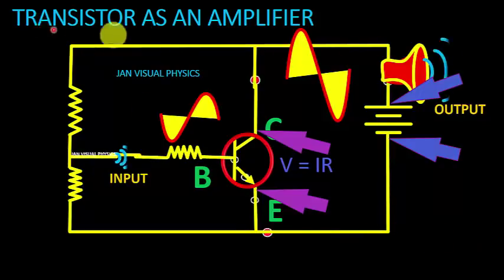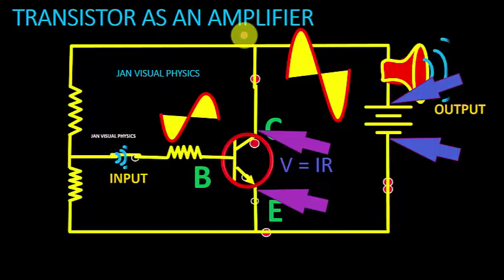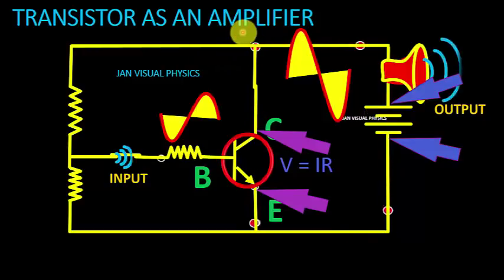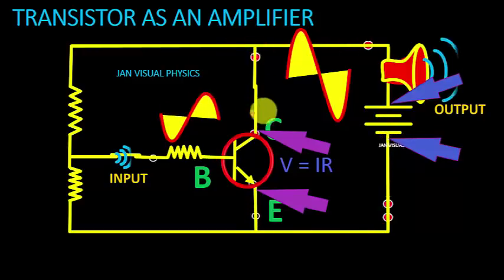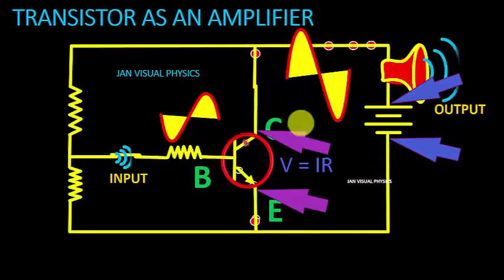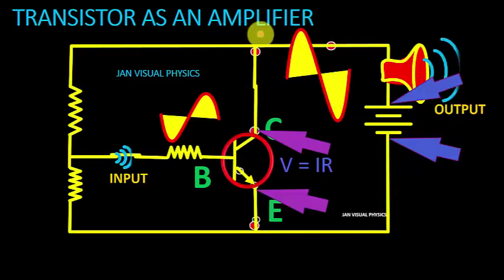In this video I shall discuss transistor as an amplifier. First we see what is an amplifier. An amplifier is a circuit which converts a very small signal into a very large signal. That is, a device which increases the amplitude of a signal is called an amplifier.